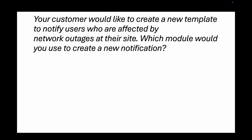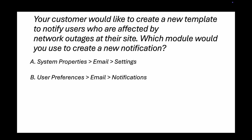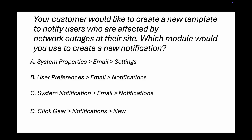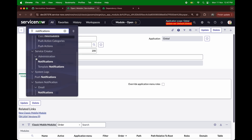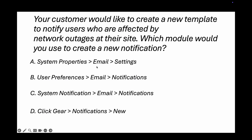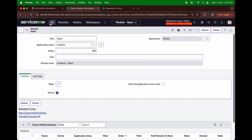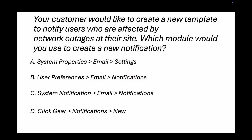Question 6: Your customer wants to create a notification template for users affected by network outages. Which module do you use? Options include System Properties Email Settings, User Preference Email Notifications, System Notification Email Notifications, and Administration Notification Overview. Be careful — options B and C look similar. In the PDI, searching for notifications shows them under System Notification. So the correct answer is option C: System Notification > Email > Notifications.